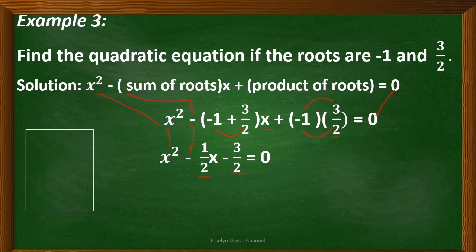Let me show the detailed solution for finding the sum of negative 1 and 3 halves. We are adding an integer and a fraction. Since the fraction is already in lowest terms, copy the denominator 2, then multiply negative 1 times 2 to get negative 2, and copy the numerator 3. Add negative 2 plus 3 to get 1, with denominator 2. So the sum is 1 half.